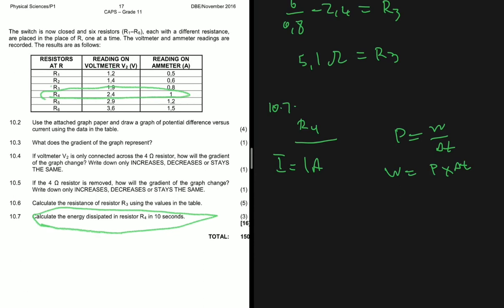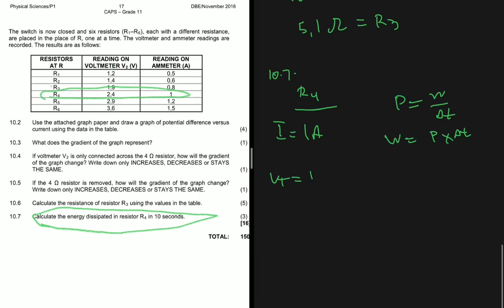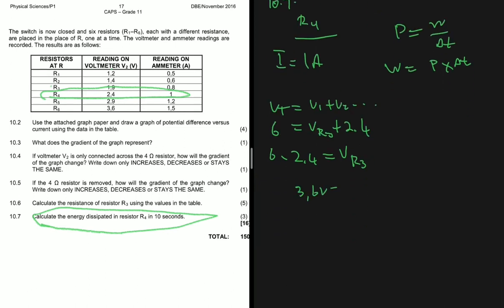At R4 the reading on V2 is 2.4 V. The voltage is only being dissipated in two places: the parallel connection and in R3. So 6 minus 2.4 equals the voltage on R3. The voltage on R3 is 3.6 volts. With that information we have V and we have I, so we can calculate the power and consequently determine the energy dissipation.